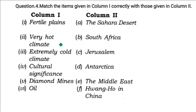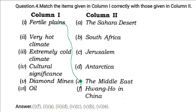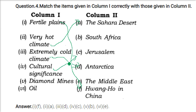Matching exercise: Fertile plains match with the Huanghe river area in China. Very hot climate matches with the Sahara Desert. Extremely cold climate matches with Antarctica and the upper part of Canada. Cultural significance matches with Jerusalem. Diamond mines match with South Africa. Oil matches with the Middle East — Qatar, Saudi Arabia, Iran, Iraq.